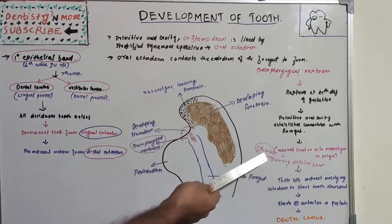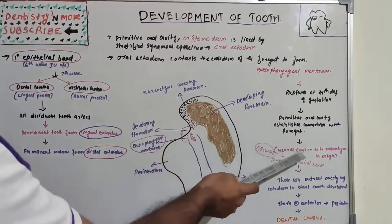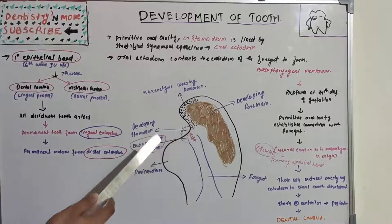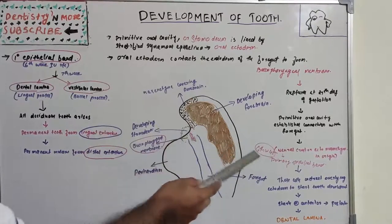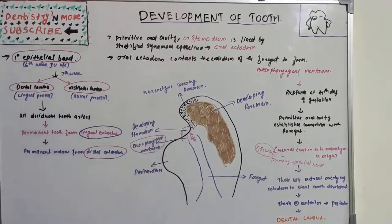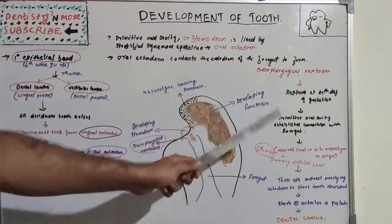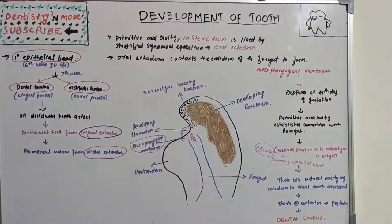Around the sixth week — approximately two to three weeks after the buccopharyngeal membrane ruptures — a structure known as the primary epithelial band is formed. This is created from a special connective tissue of neural crest or ectomesenchyme origin. So the buccopharyngeal membrane ruptures at 27 days, and the primary epithelial band forms at the sixth week.